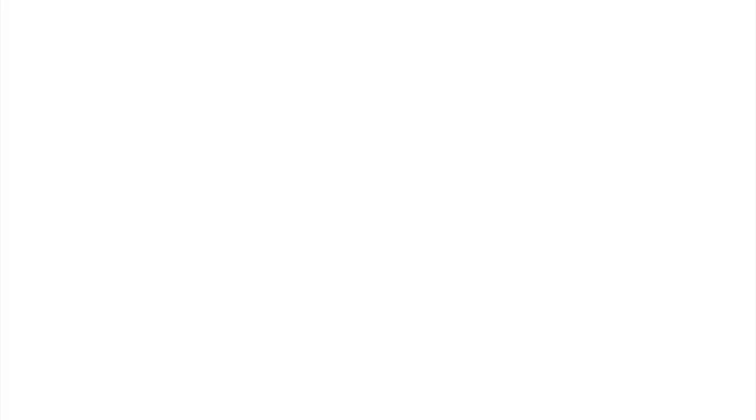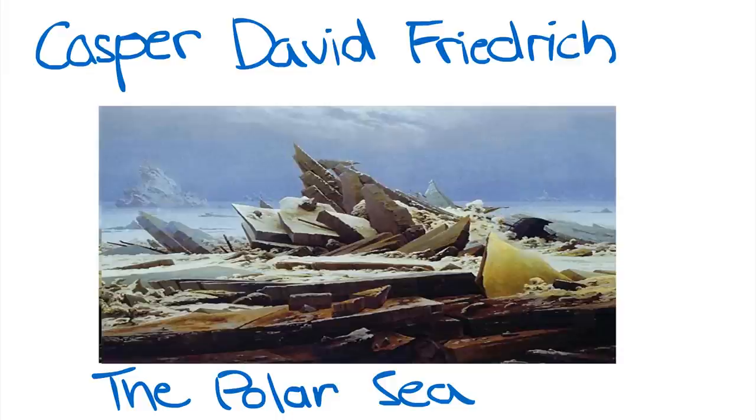An example of such an artist who portrayed the sublime was German artist Caspar David Friedrich. His painting, The Polar Sea, shows the polar ice engulfing and crushing a boat, a fine example of nature's mighty power.